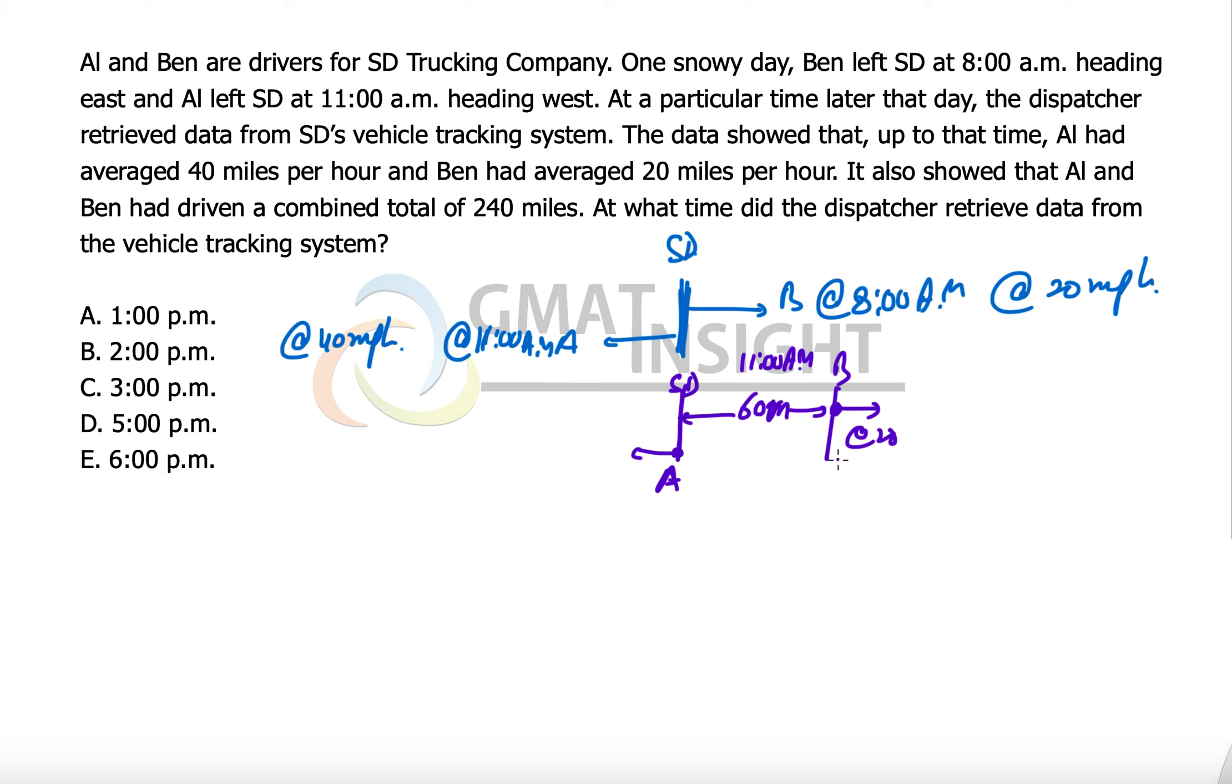Right, so 60 miles was already done. And after 11 o'clock, now they both have started moving. So at 11 AM, now we can quickly calculate the relative speed, because relative speed is calculated only at the time when the two objects are moving simultaneously. Therefore we have to reach this scenario that the relative speed at 11 AM will be equal to 20 plus 40, because Al has averaged a speed of 40, which is equal to 60 miles per hour.